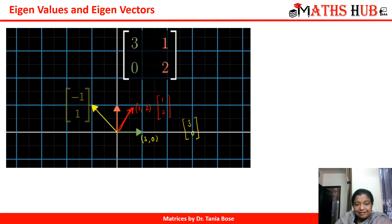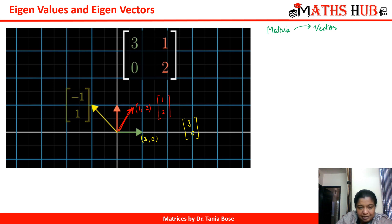Now, there are certain matrices — what happens when a matrix hits a vector? What is the transformation? Let's see. I have taken this yellow vector whose coordinates are minus 1 comma 1, in the second quadrant. Let us see when this matrix hits this vector, what will happen.